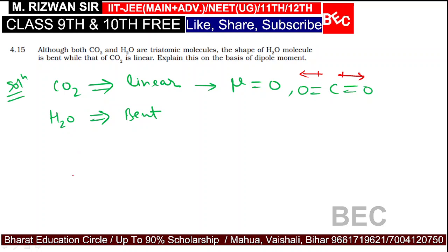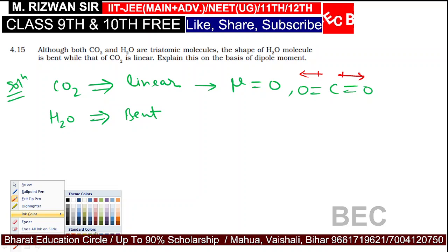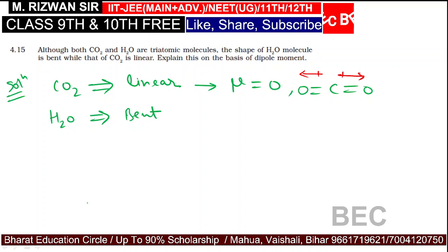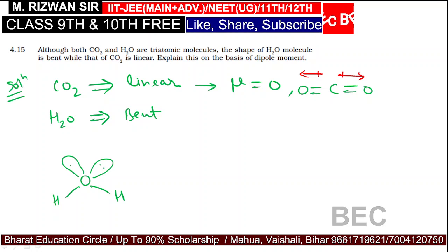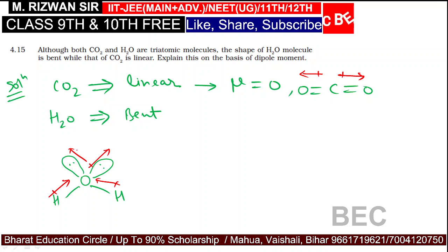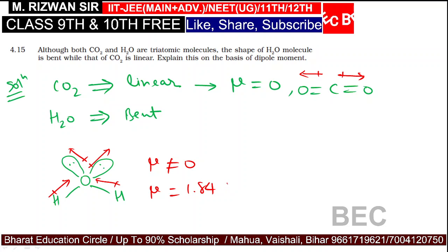In the case of water, the structure is written as H-O-H. The dipole moment is written as follows. Here, the dipole moments are not cancelled. The actual dipole moment of water is 1.84 D.